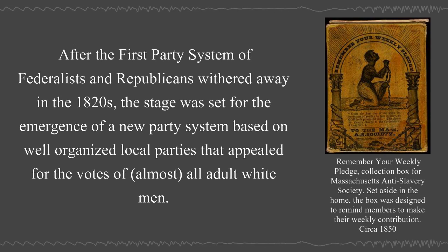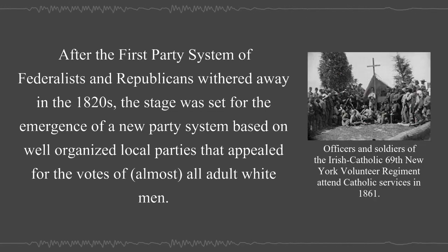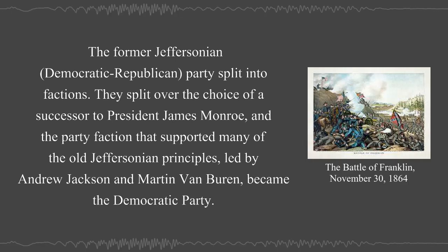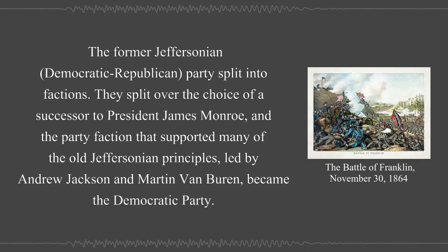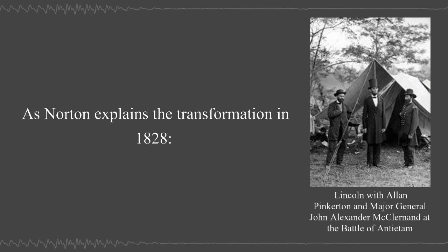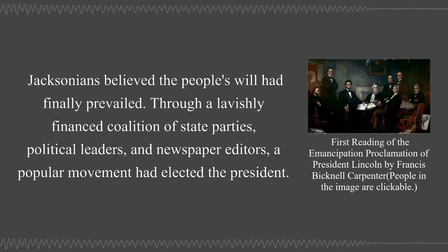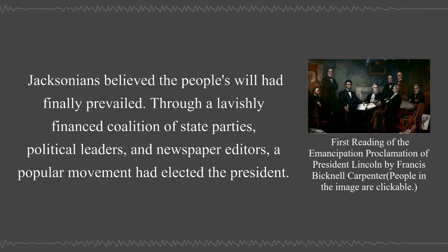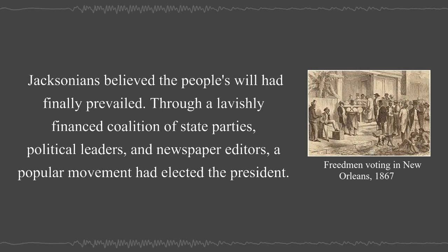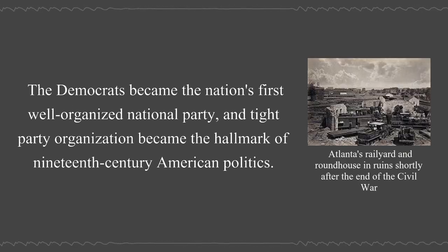After the first party system of Federalists and Republicans withered away in the 1820s, the stage was set for the emergence of a new party system based on well-organized local parties that appealed for the votes of almost all adult white men. The former Jeffersonian Democratic-Republican parties split into factions over the choice of a successor to President James Monroe. The party faction that supported many of the old Jeffersonian principles, led by Andrew Jackson and Martin Van Buren, became the Democratic Party. Jacksonians believed the people's will had finally prevailed. Through a lavishly financed coalition of state parties, political leaders, and newspaper editors, a popular movement had elected the president. The Democrats became the nation's first well-organized national party, and tight party organization became the hallmark of 19th-century American politics.